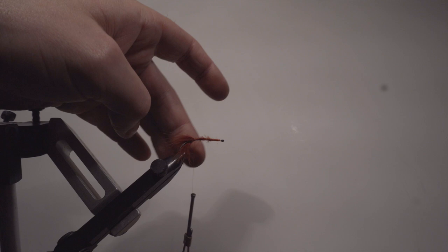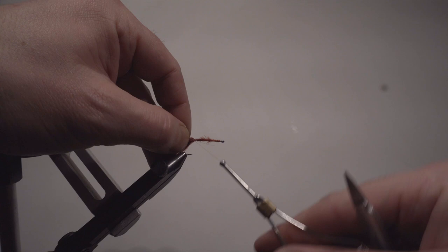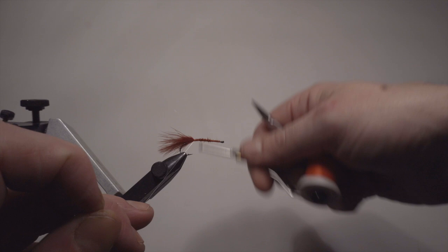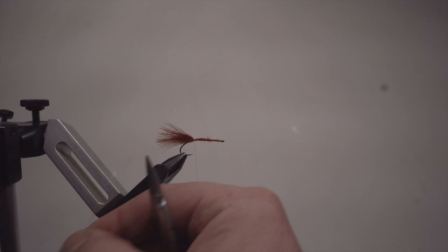Once again I'm going to attach the monofilament, 4x diameter, around 0.16, 0.18 in between there. Sometimes I even use 0.20 millimeters, which is 3x. That also works on larger flies.